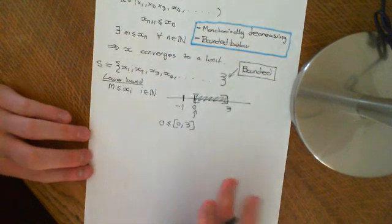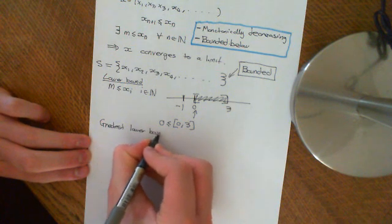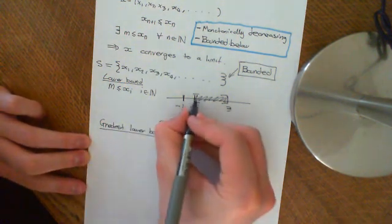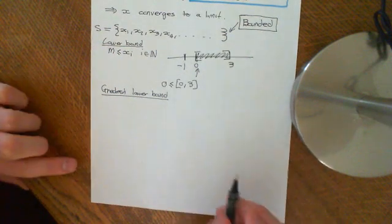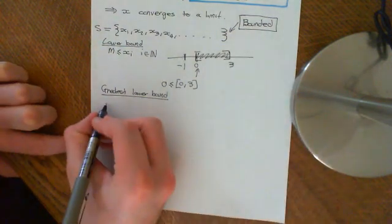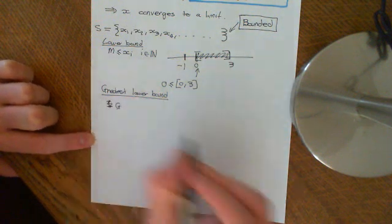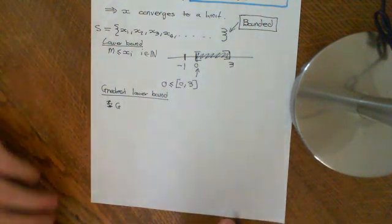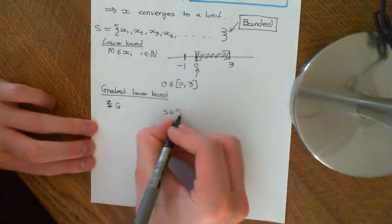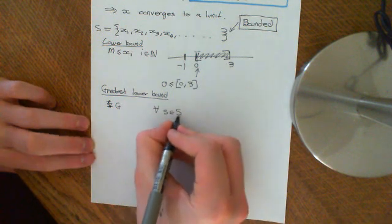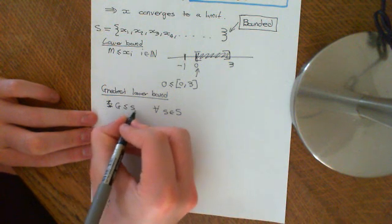The concept of being the greatest lower bound: hopefully it should be obvious that 0 is going to be the greatest lower bound here — that if you go any higher number, it's no longer going to be a lower bound. And that is exactly what it means to be the greatest lower bound. So if g is the greatest lower bound for a set S, then it means firstly that g is a lower bound — g is less than or equal to all the elements of the set.